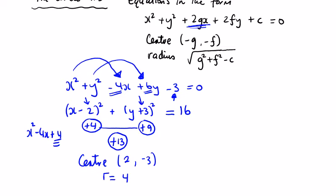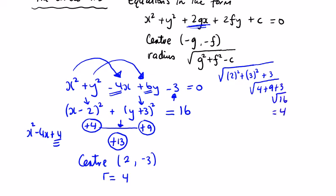If you don't want to use the completing the square method, just halve the coefficient and change the sign to find the centre. For the radius, using the formula: half of the coefficient of x is 2, so that's 2 squared; half of the coefficient of y is 3, so that's 3 squared; then minus c, which is minus minus 3, giving plus 3. So the radius is the square root of 4 plus 9 plus 3, which is the square root of 16, equal to 4. Both methods work fine.